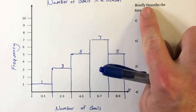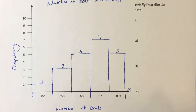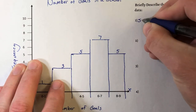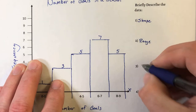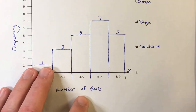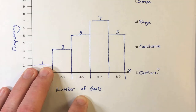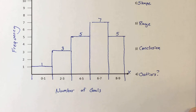We're now going to briefly describe the data. When we briefly describe the data, we're typically going to outline three to four things. In a previous video we went over three specific things — we're now going to add one, which is an outlier. So we discussed describing the shape, then the range, then making a conclusion — and we're going to add outlier. Are there any outliers? If it does have an outlier, we're going to be very specific and discuss what it is. If it doesn't, we'll just say no.